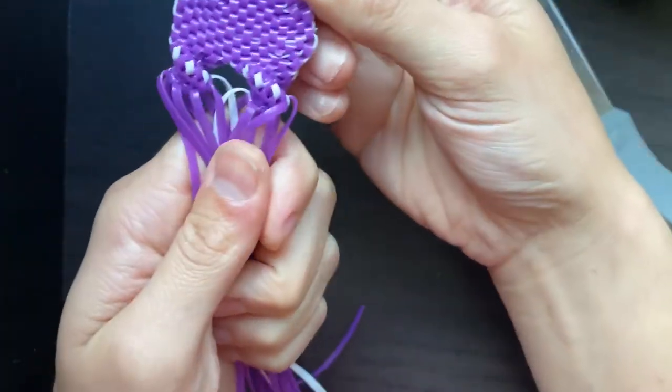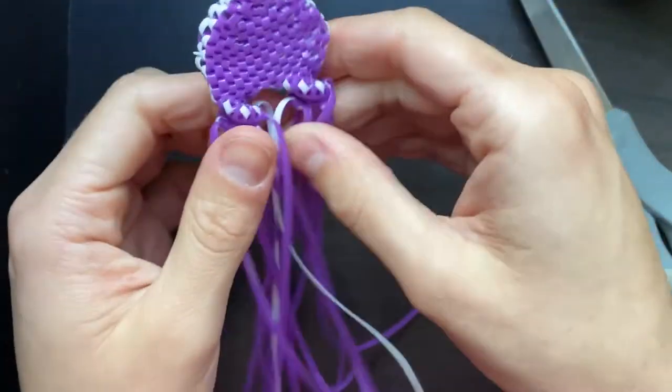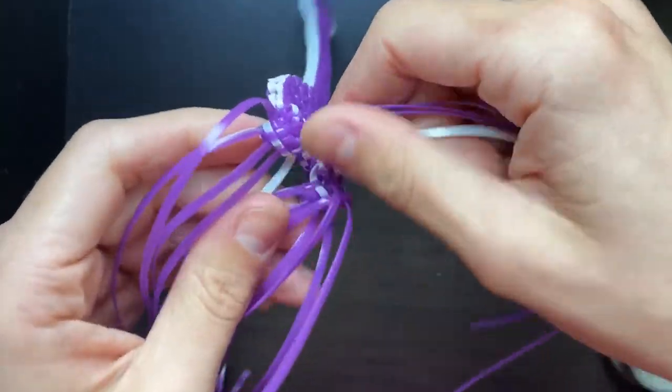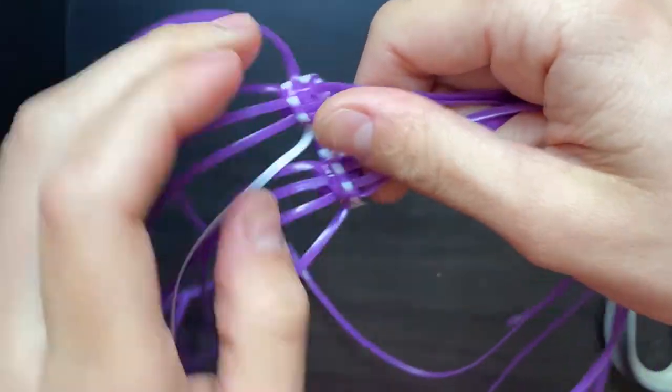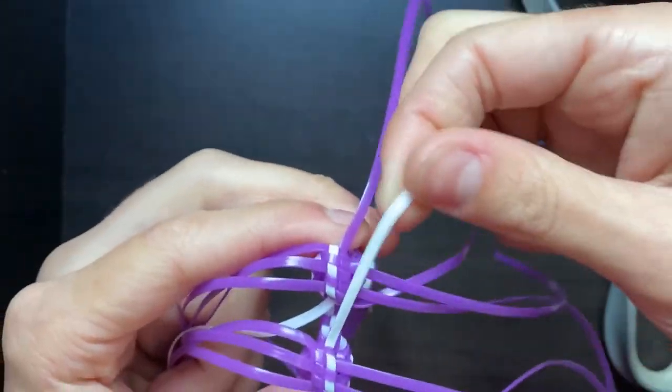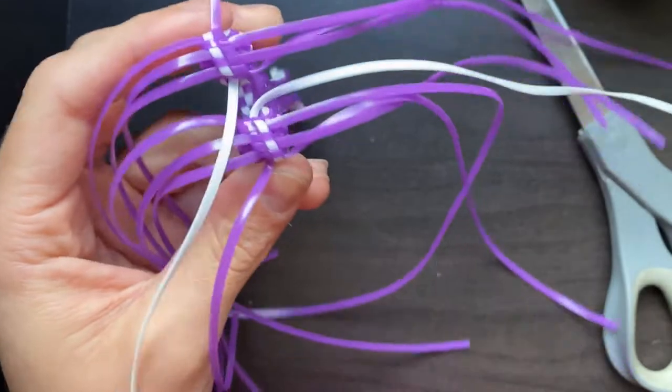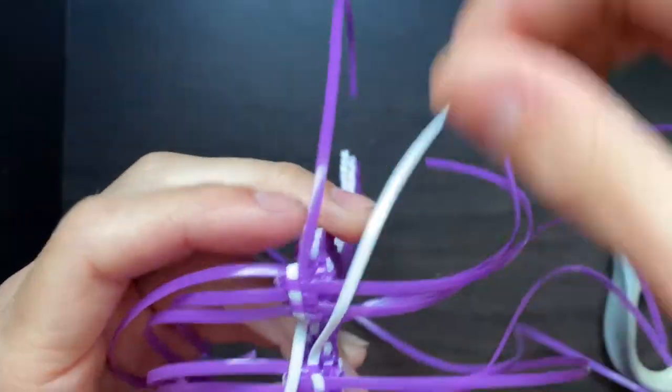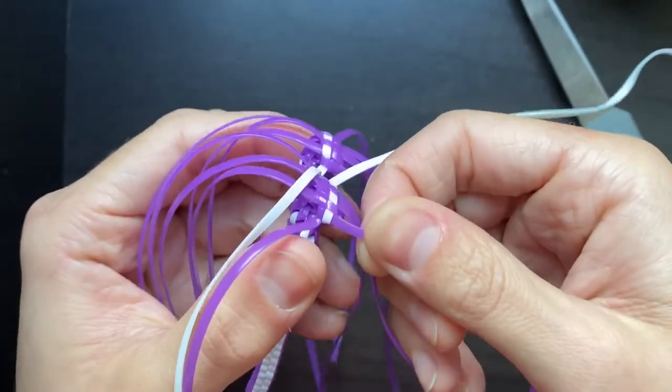And your lanyard should look something like this with the two twists. Not completely all the way around, because if I had done a 360 degree circle, then my white strings would be where the purple main strings are. But they're actually not, they're facing the other way.